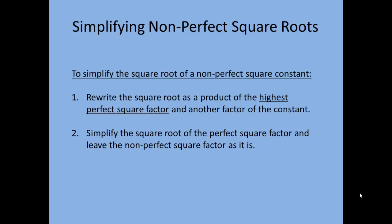If it's a non-perfect square number, you have to take the square root of it. The first thing you want to do is rewrite the square root as a product of the highest perfect square factor and another factor of the constant. So you're going to look at the number you're taking the square root of, find the highest perfect square that's a factor of that number, and write it as two square roots — one being the perfect square, the other being the non-perfect square.